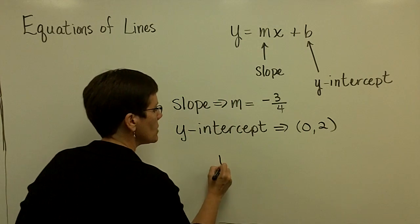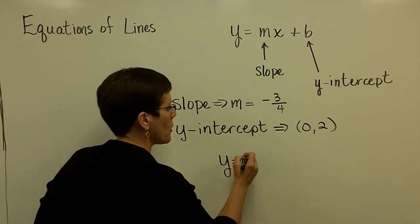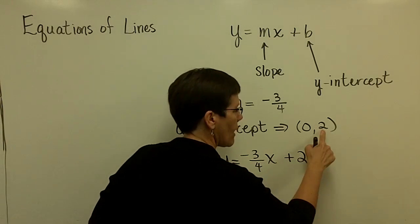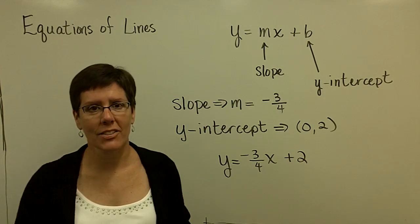you would tell me that the equation in slope-intercept form is negative 3 fourths x plus that value of 2 for the y-intercept.